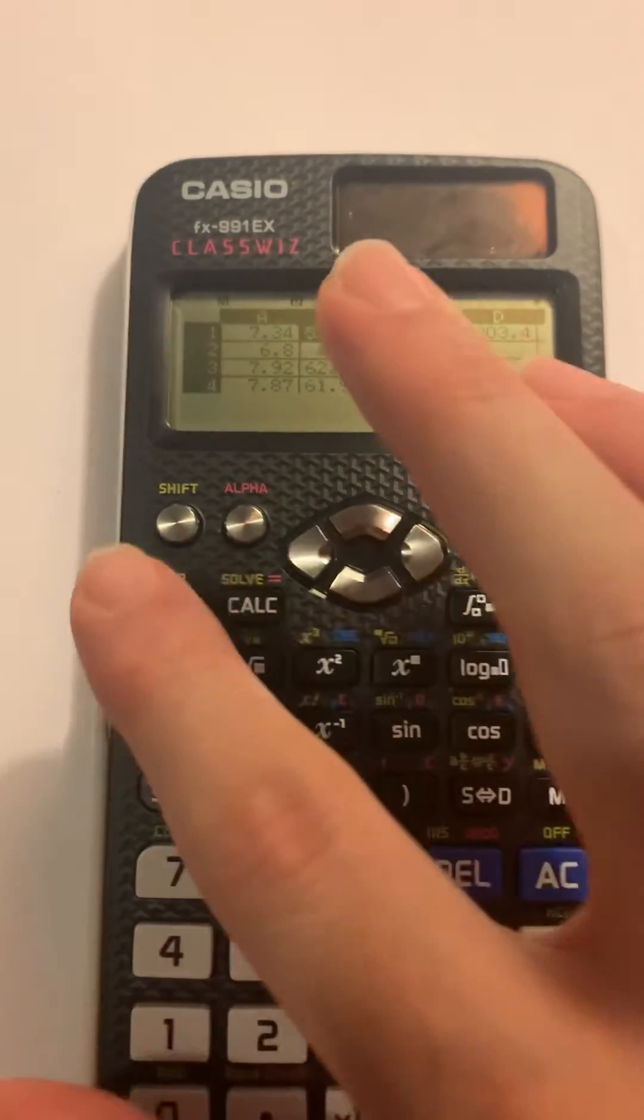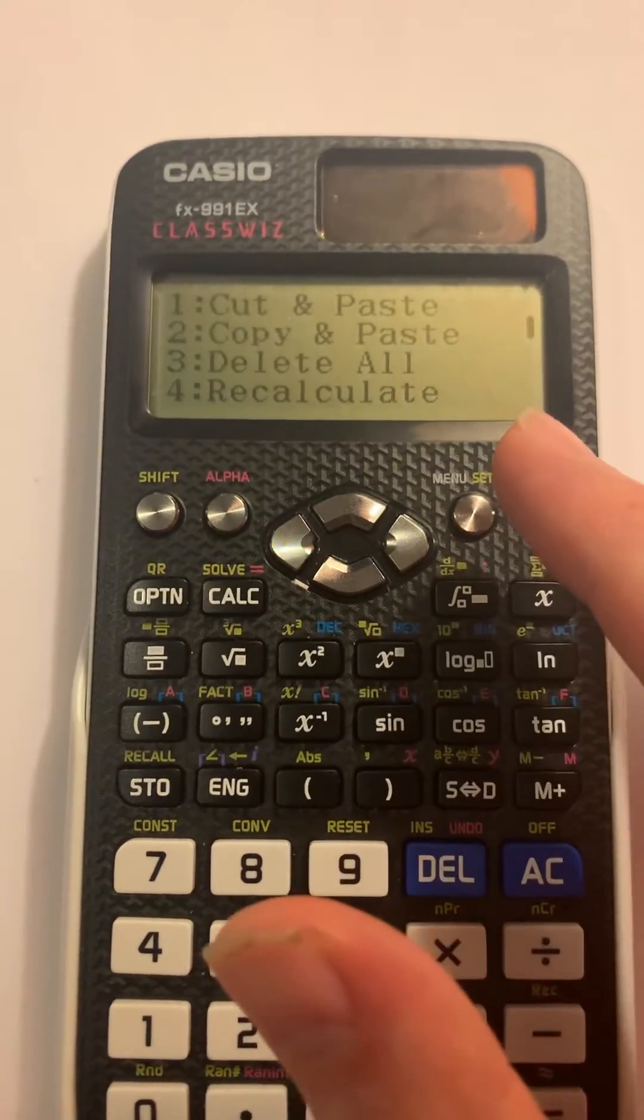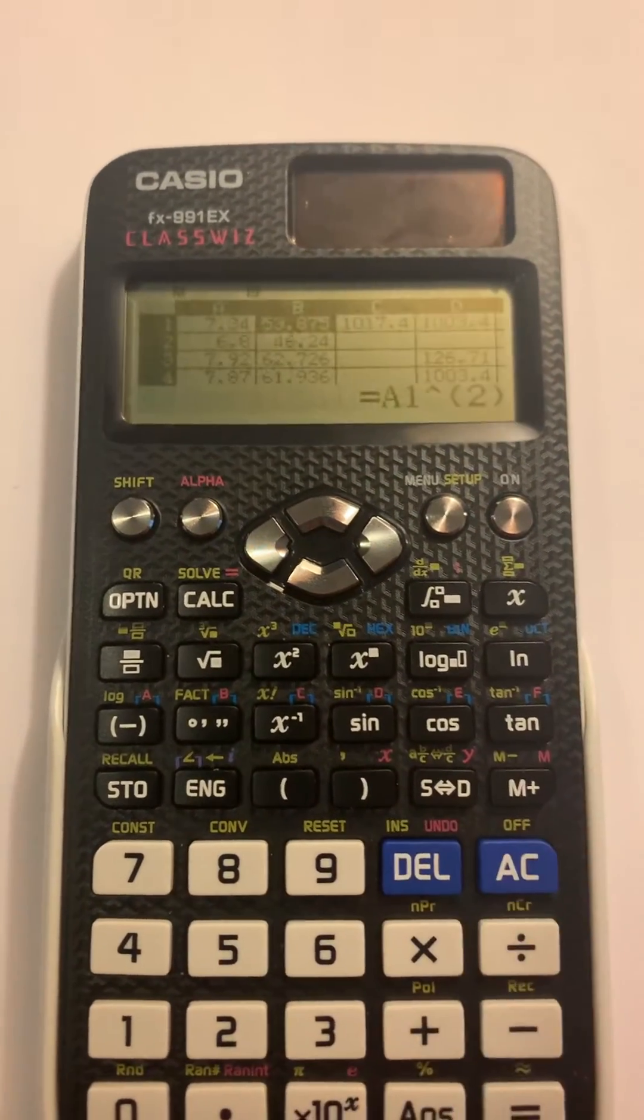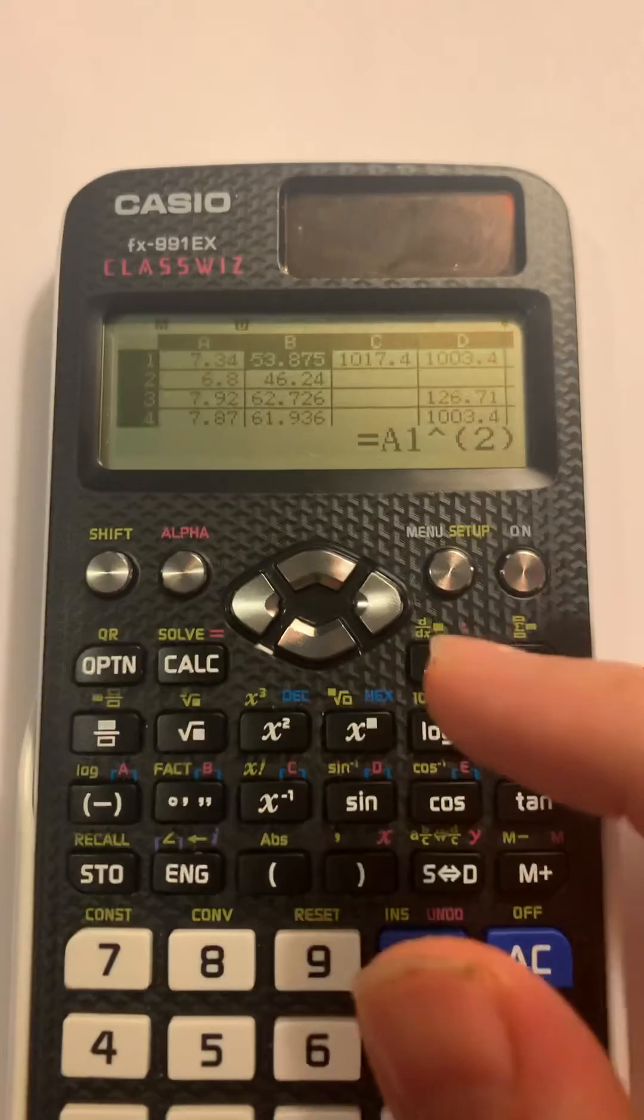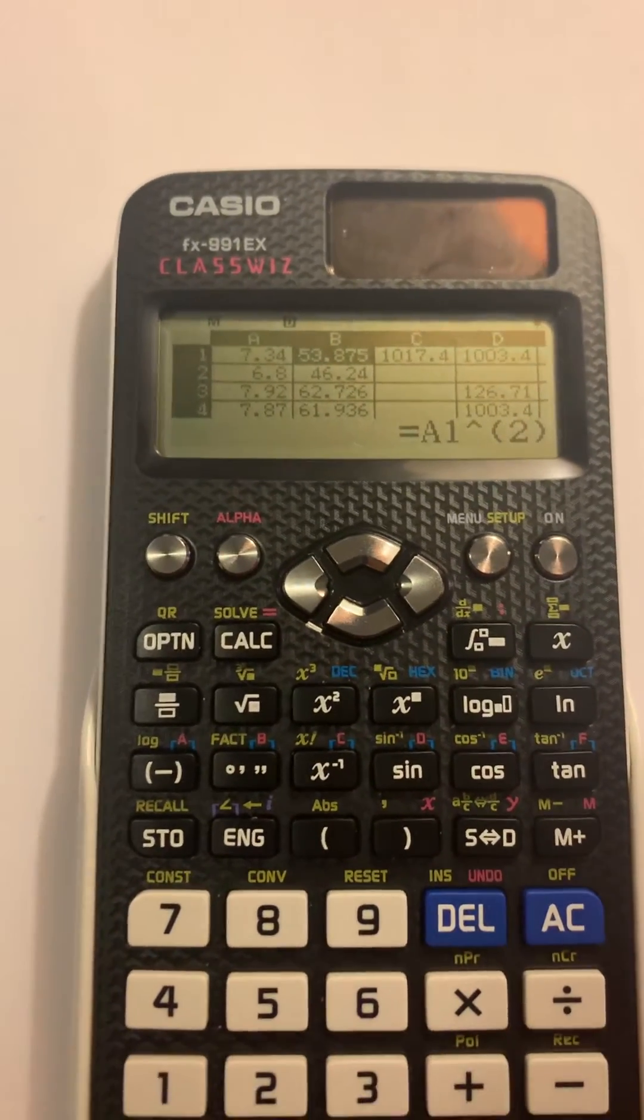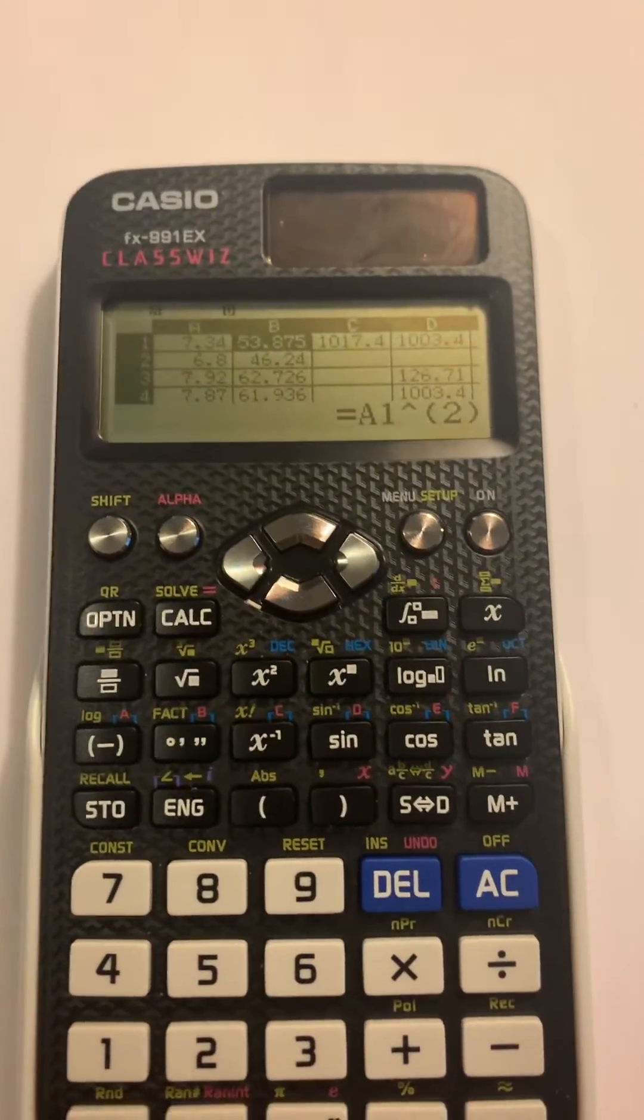But then I went to option, copy and paste, and then I was able to copy and paste what would be cell B1 into B2 and repeat that process all the way down.